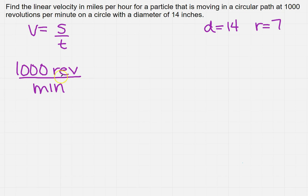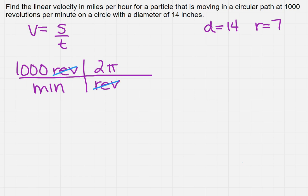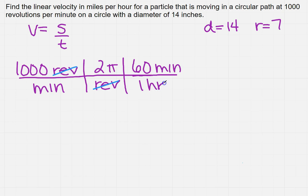So if I've got 1,000 revolutions per minute, I know I'm going to need to get radians. So I need 2π per revolution — the revolutions are going to cancel. Now I need to get it into miles per hour. I can get from minutes to hours: there are 60 minutes in one hour, so there's the hour part of the miles per hour.